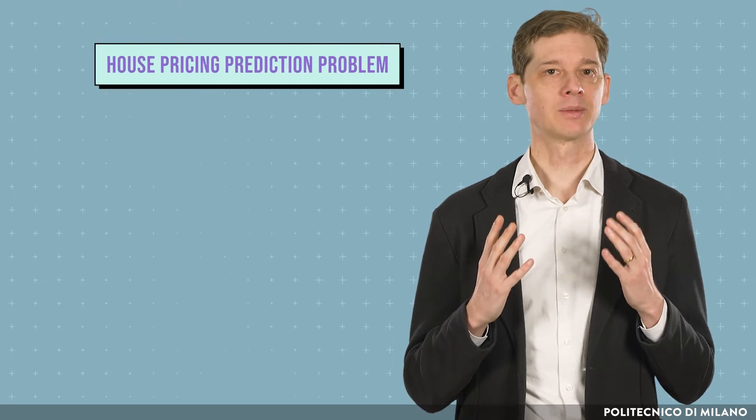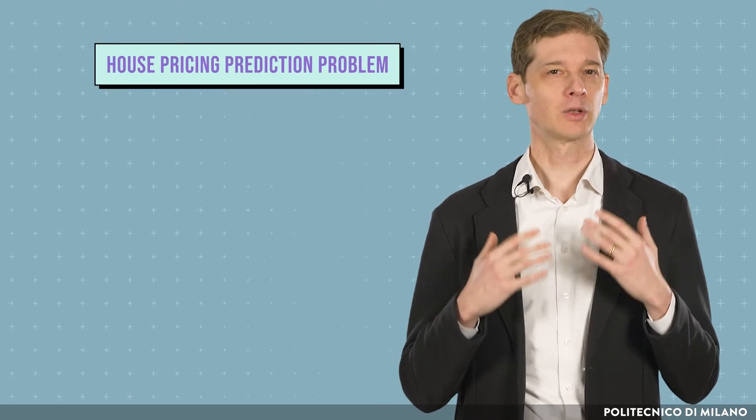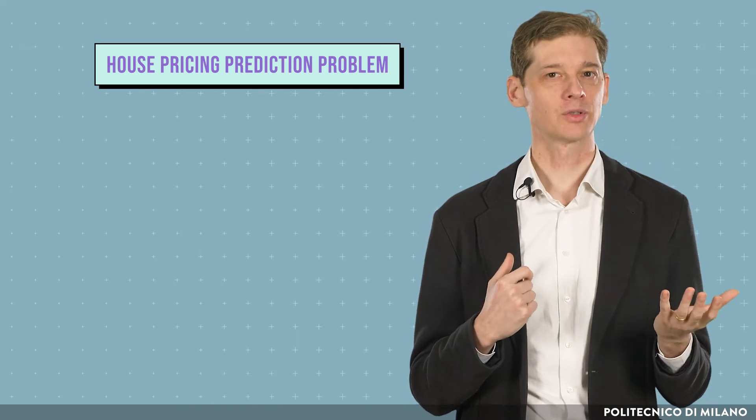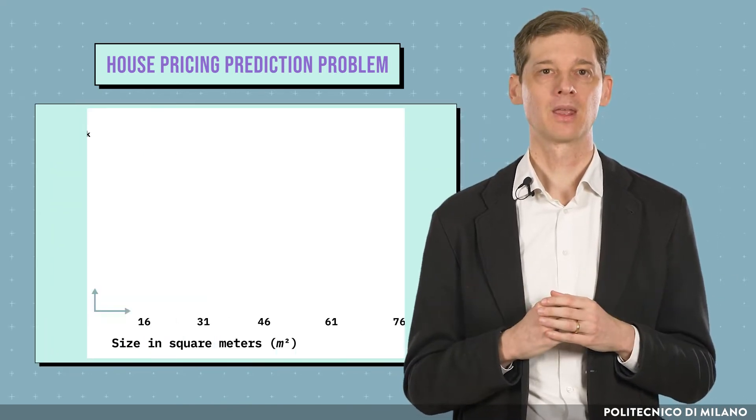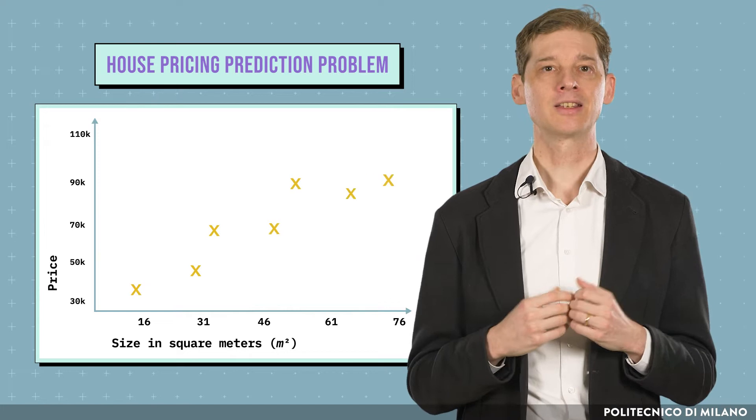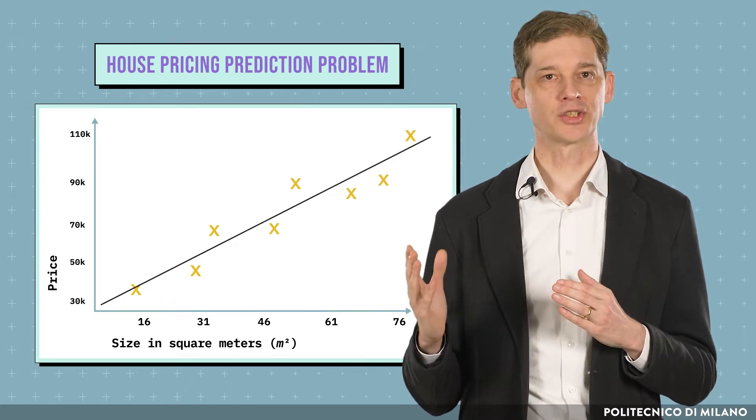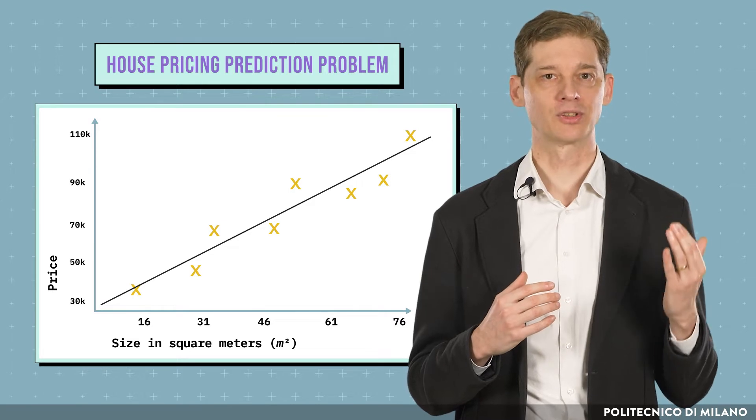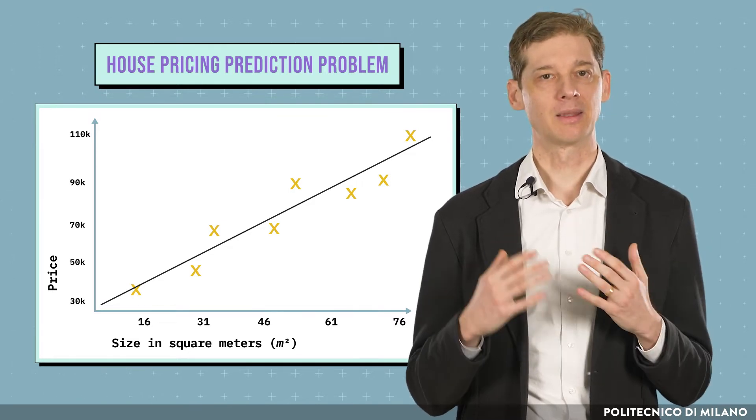To fix the ideas, let's consider the house pricing prediction problem and assume that we have a set of examples that relate the size of a house to its price. In the figure, we can see the examples represented by yellow crosses, and the black line is the model linear in the input variable size that minimizes the mean square error.